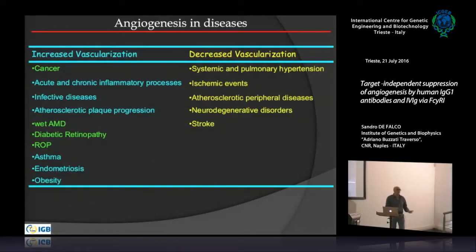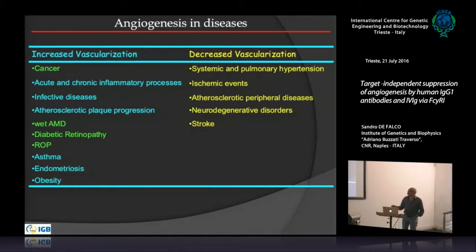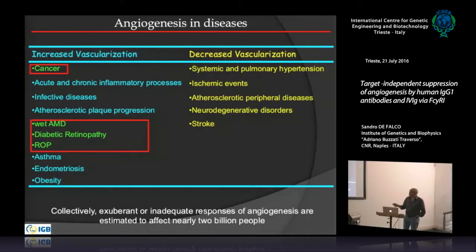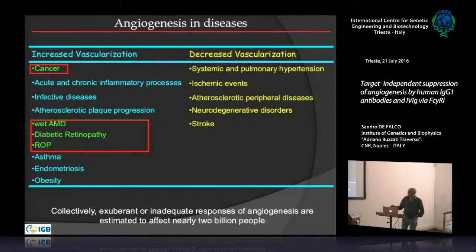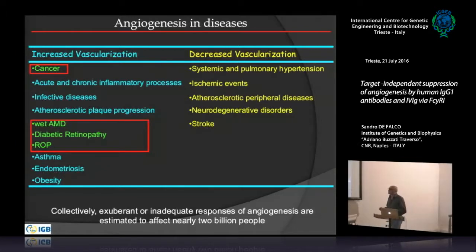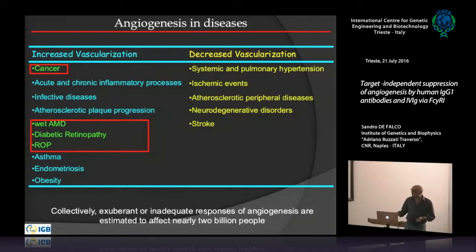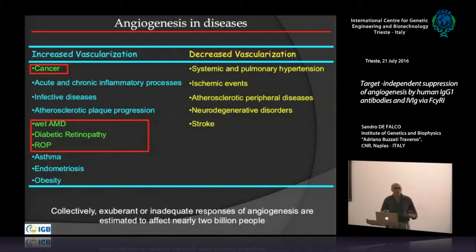As many of you know, angiogenesis is associated with a plethora of diseases that can be divided into those with pathologically increased vascularization, and those with decreased vascularization. About one-third of the world population will be impacted by a disease in which angiogenesis is involved during their lifetime, making it a very important target for therapy.